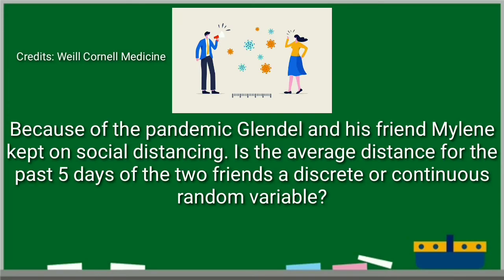Because of the pandemic, Glendale and his friend Mylene kept on social distancing. Is the average distance for the past five days of the two friends a discrete or continuous random variable? Exactly. It is continuous random variable. Exactly. Because it talks about distance.